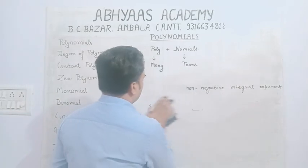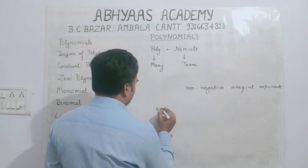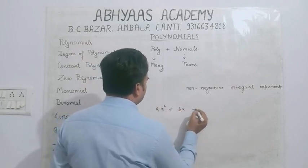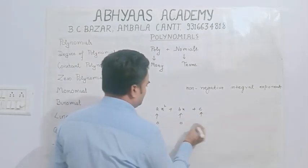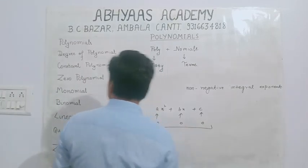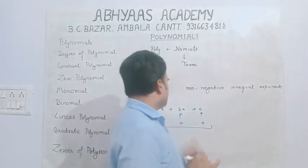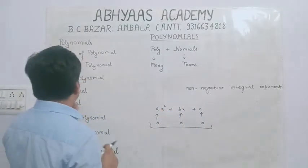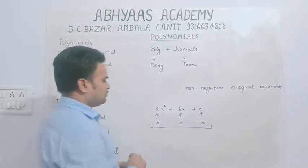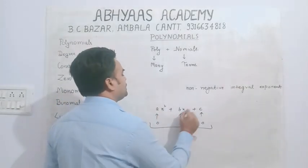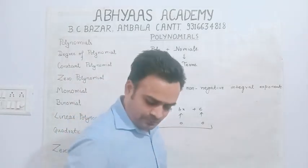Next point is zero polynomial। Zero polynomial क्या होता है? माना एक expression है: ax² + bx + c। अगर इसमें a, b और c — तीनों constants को 0 कर दिया जाए, तो यह polynomial 0 polynomial बन जाएगा। और 0 polynomial की degree define नहीं होती।